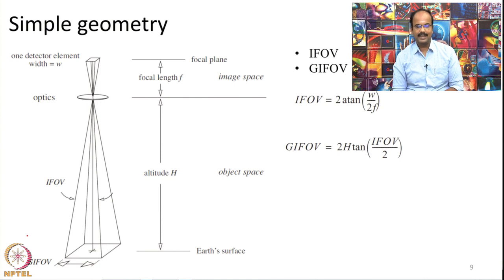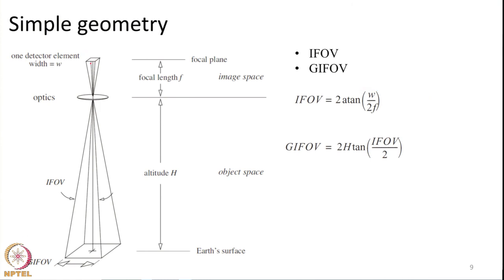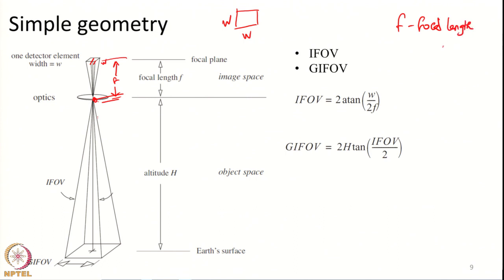Before we move on to explaining what spatial resolution is, we will first see a simple geometry of how the earth is being perceived by one detector element within the sensor. Let us assume this is one detector element within the sensor. The width of the detector is W — let us assume it is in the form of a square with width W on both sides. This is the optics element, and the distance from the focal plane where the detector is located to the optics — the first point where the light from earth enters — is the focal length F.